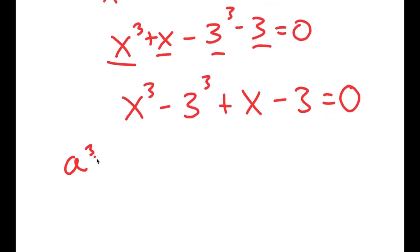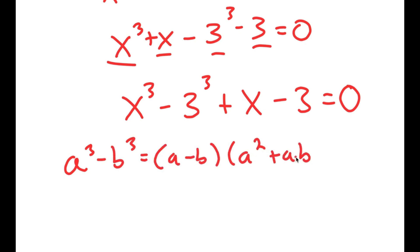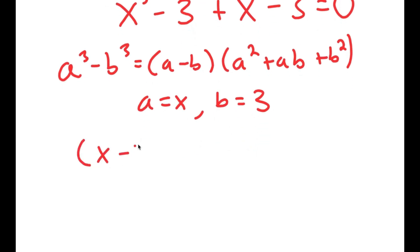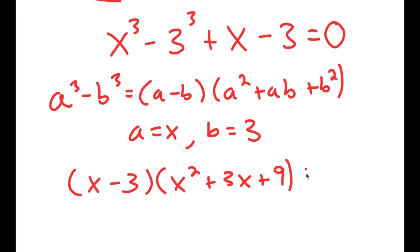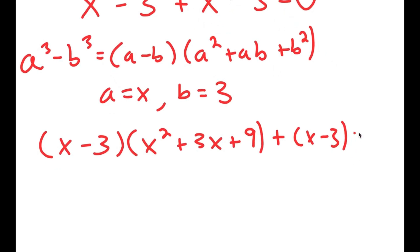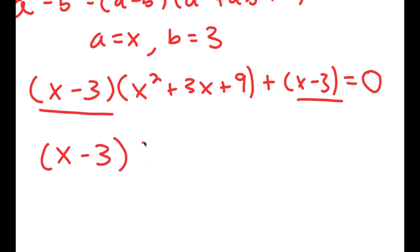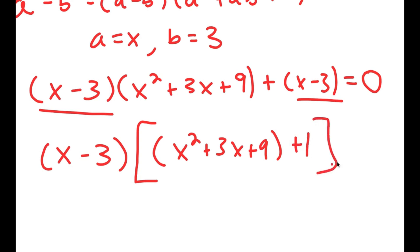Now from here, if I have something in the form a to the power of 3 minus b to the power of 3, this is equal to a minus b times a squared plus ab plus b squared. So in this case, a is equal to x and b is equal to 3. So I get x minus 3 times x squared plus 3x plus 9, plus I have my x minus 3 at the end, is equal to 0. Notice how both of these terms have x minus 3 in them, so I'm going to factor out x minus 3. I get x minus 3 times x squared plus 3x plus 9 plus 1 is equal to 0.